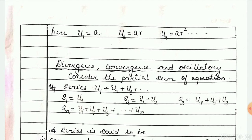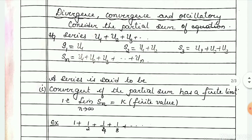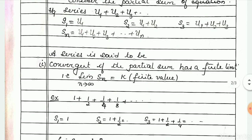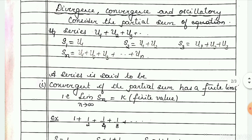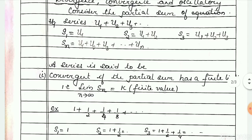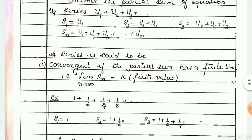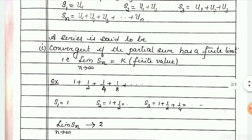Now, how do you check whether a given series is convergent, divergent, or oscillatory? We consider the infinite series u1 plus u2 plus u3 and so on, and examine its partial sums. s1 is the first term, s2 is the sum of the first two terms u1 and u2, s3 is the sum of the first three terms u1 plus u2 plus u3, and so on up to s_n.